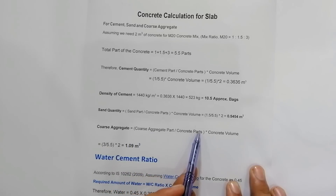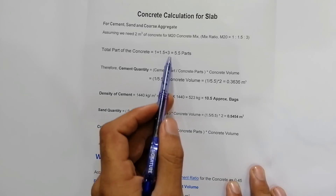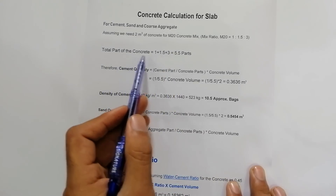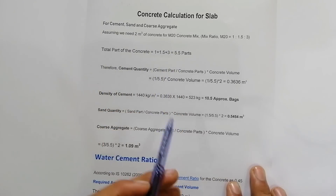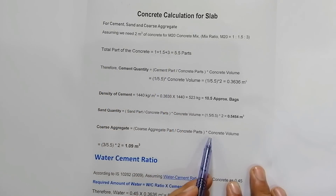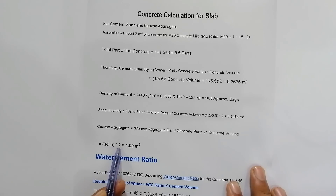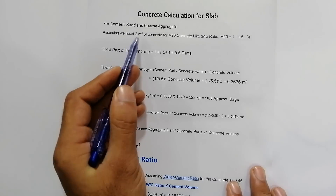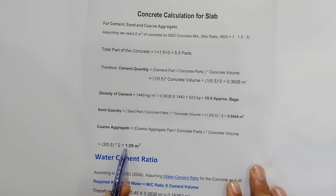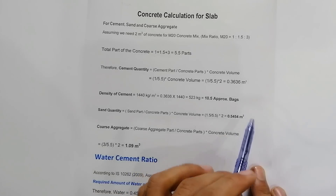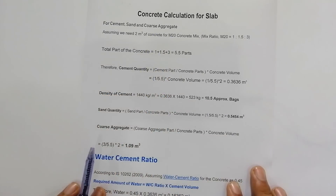For coarse aggregate: Coarse aggregate quantity = (Coarse aggregate part / Total concrete parts) × Concrete volume. Coarse aggregate part = 3, total parts = 5.5. So: 3 / 5.5 × 2 = 1.09 m³ of coarse aggregate is required.